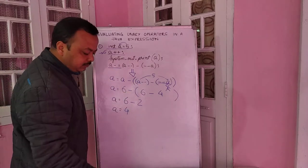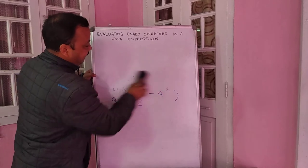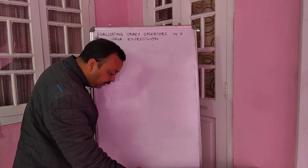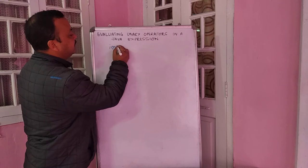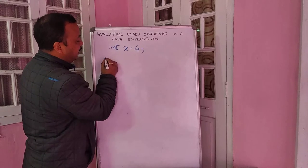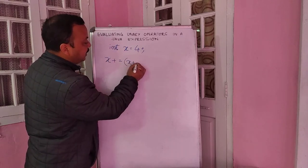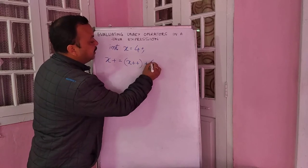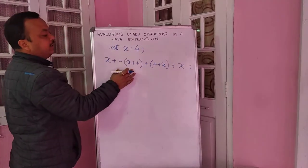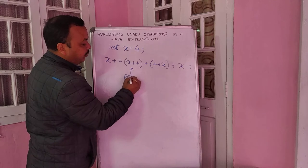You can pause the video and note that down. I will take another example. As you see more expressions, the concept will become clearer. The next expression is: integer x equals 4, and then x plus-equals x-plus-plus plus plus-plus-x plus x. The only difference here is this involves post-increment and pre-increment rather than decrement.